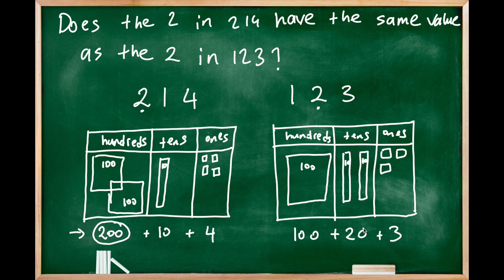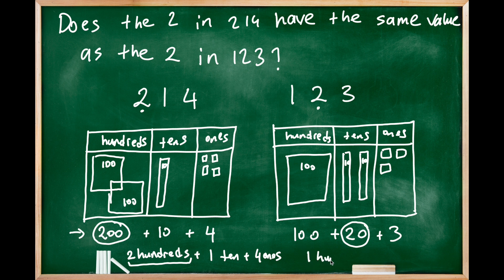So as you see, this 2 represents two hundred in the hundred place. This 2 represents 20 in the tens place. So I have here two hundreds plus one ten plus four ones. Here we have one hundred, two tens, three ones.